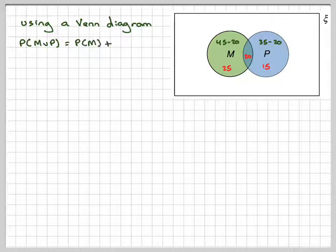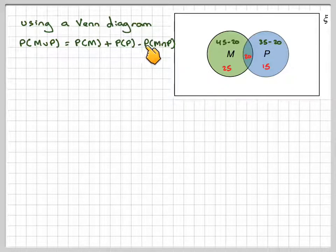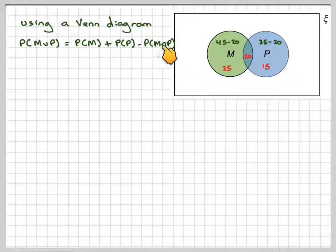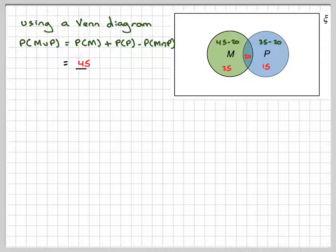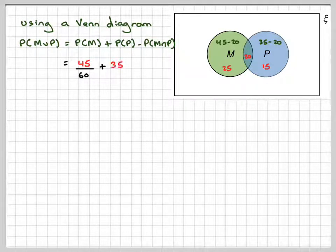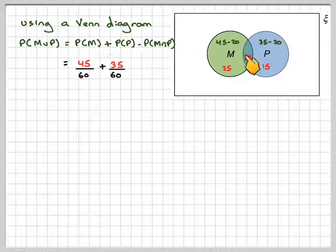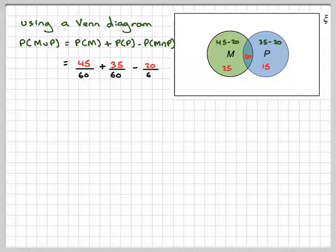So the probability of M union P, in this case, it's the probability of M plus the probability of P minus the probability of the intersection of both sets. So that's 45 out of 60 studied maths, plus 35 out of 60 studied physics. And then we have to subtract those who studied both. Otherwise, we're going to count them twice.